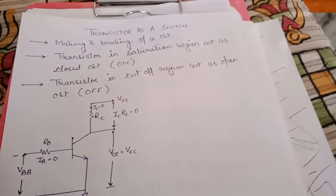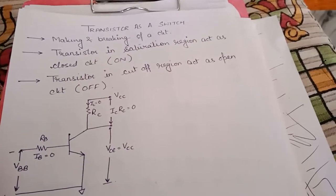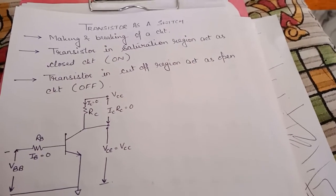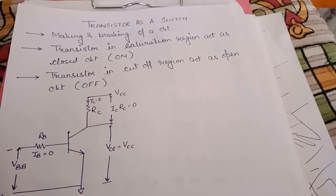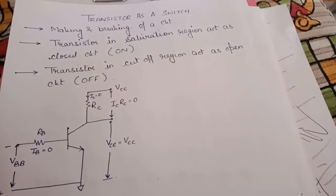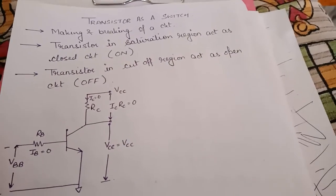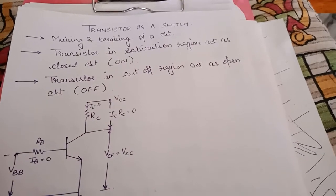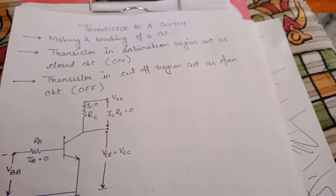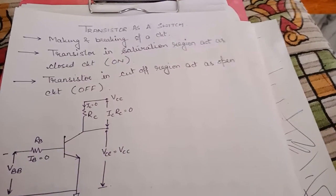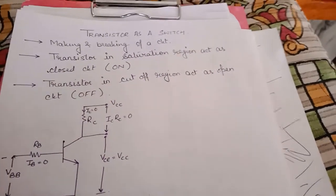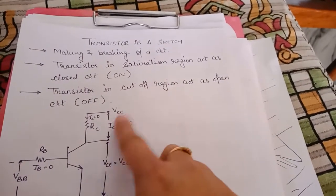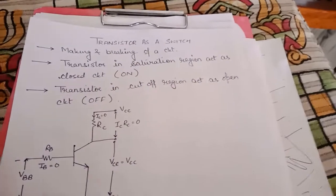So why do we use a transistor as a switch? The speed of a transistor is very high for switching, that is why the transistor is the most popular device used for switching. You know that a transistor operates in three regions: the saturation region, the cutoff region, and the active region. But for making a transistor act as a switch, we operate it only in the saturation region and the cutoff region. When the transistor is in the saturation region it acts as a closed circuit, and when it is in the cutoff region it acts as an open circuit.